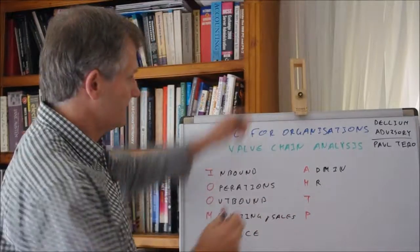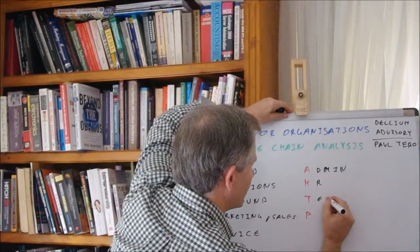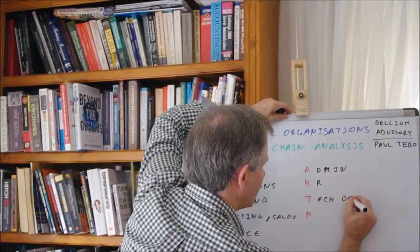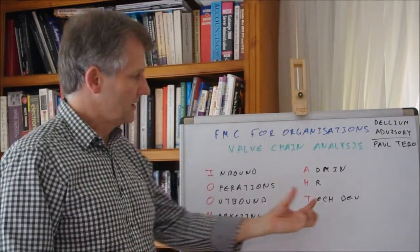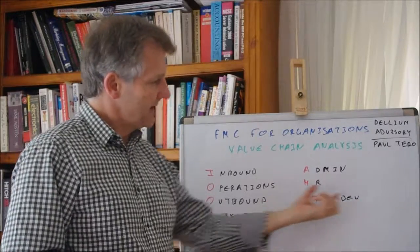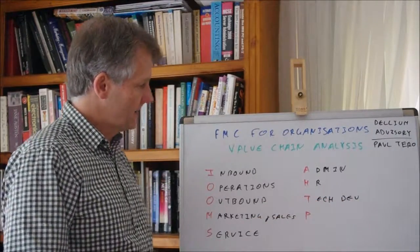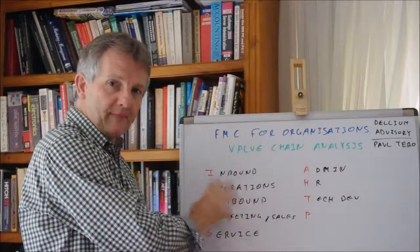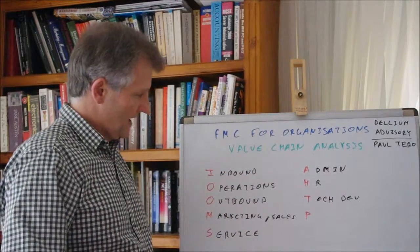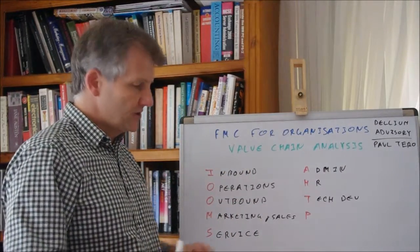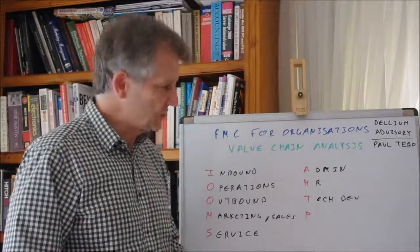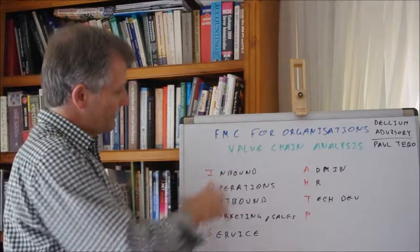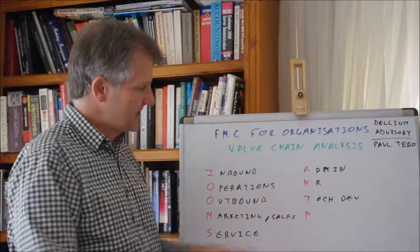T, technology development - you could also call this innovation. Is there investment happening here to improve what's happening in this primary aspect of the value chain? It's talking about how you're developing your goods, your services, how you're developing and improving each of these aspects.